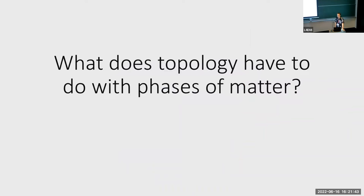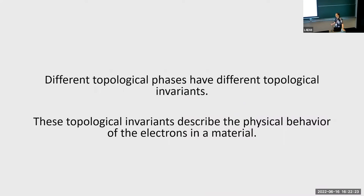That's a brief introduction to what topological invariants are. I'll pause for a moment for questions before I proceed to the question of what does topology have anything to do with phases of matter and physics. If there are no questions at this point, let's proceed to physics. What I'm going to explain to you is that different topological phases have different topological invariants. These topological invariants describe the physical behavior of the electrons in a material, or more generally spins or some other degrees of freedom. I'm going to focus on electrons.